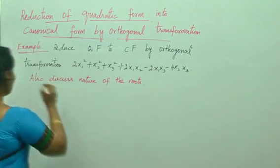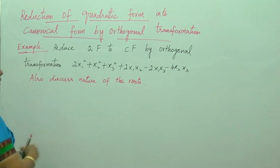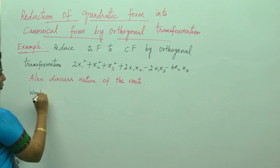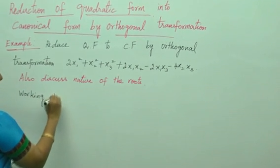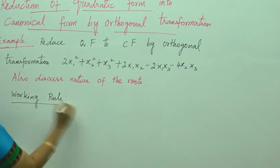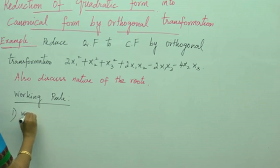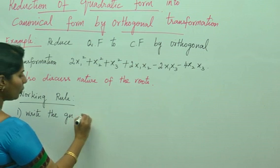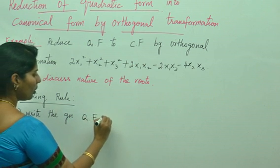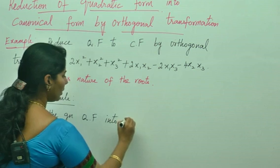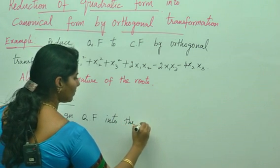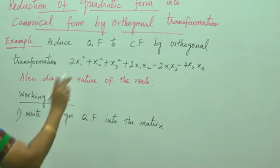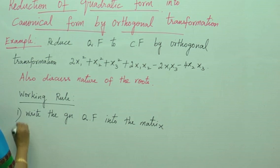Before moving on, let me tell you the working rule of the reduction part. Step 1: Write the given expression, or the quadratic form, into the corresponding matrix. Step 2: Find the eigenvalues.